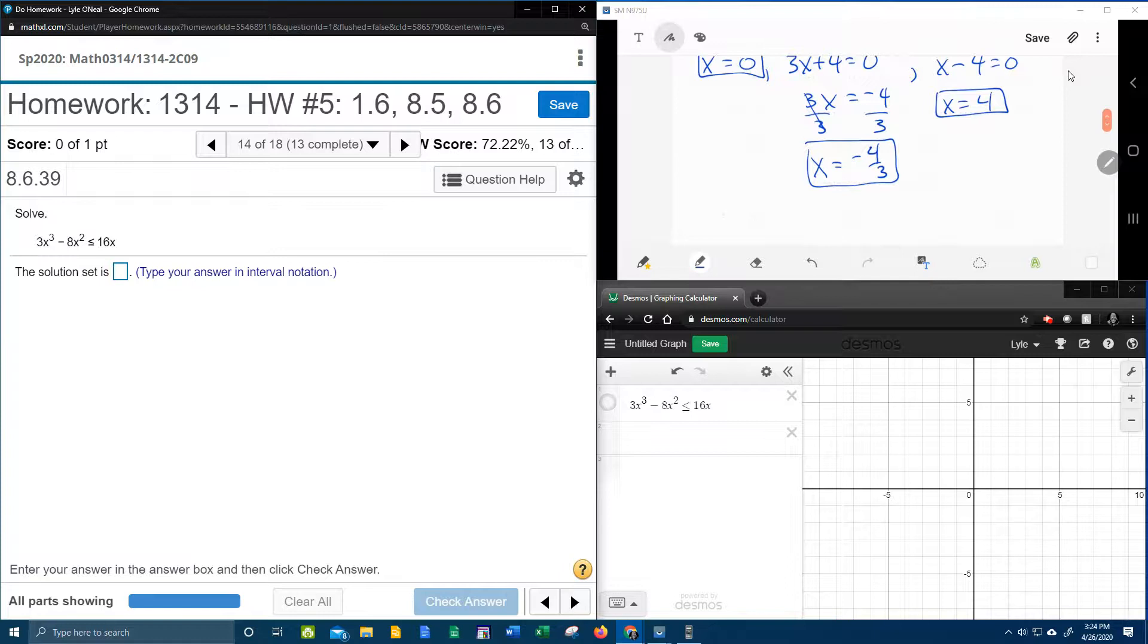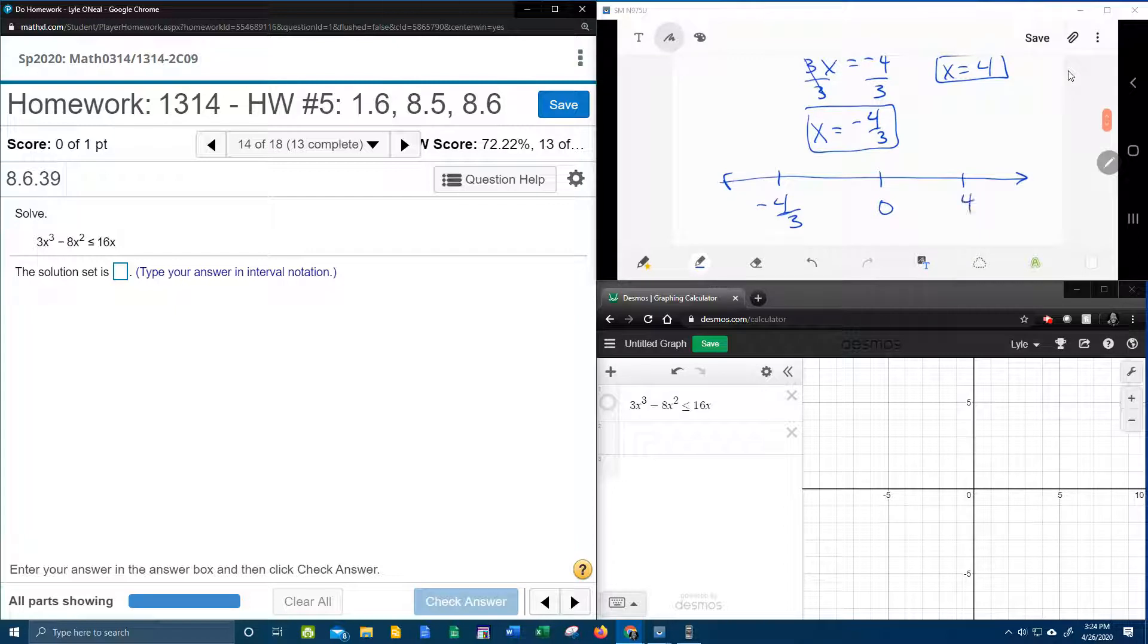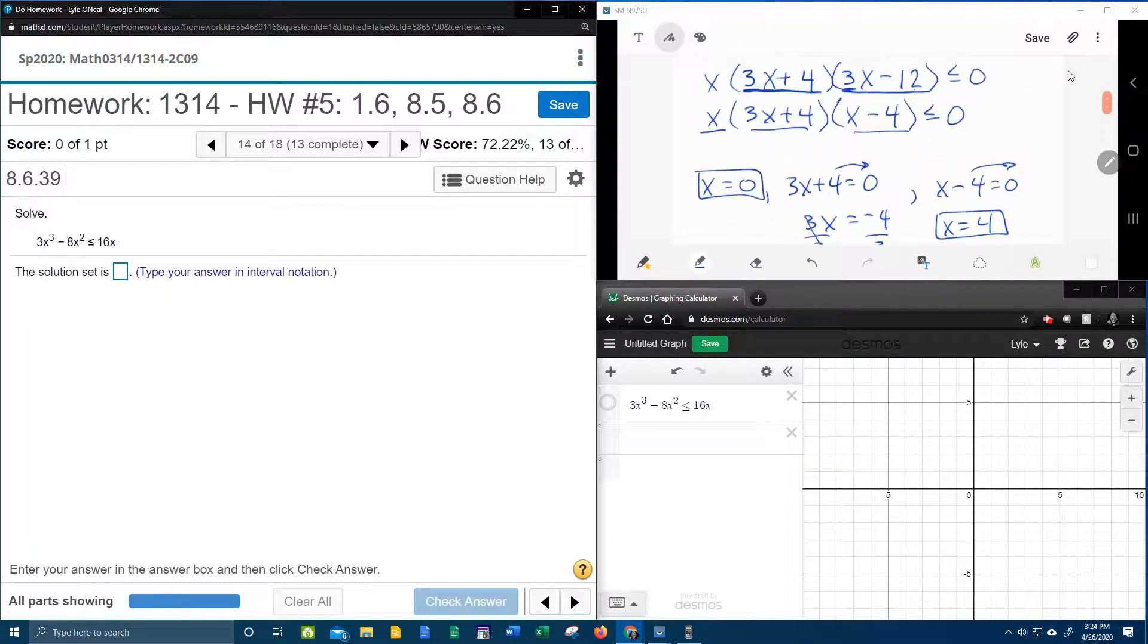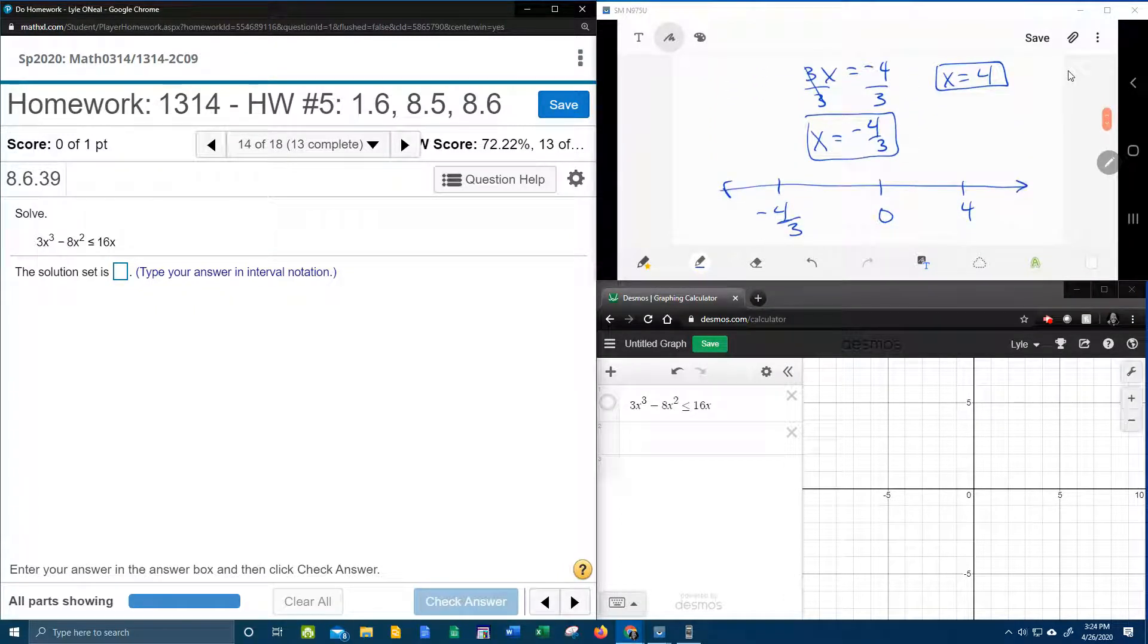And so now I need to go to the number line with my critical points. Make sure you put them in the right order. Negative 4 thirds first. It's the smallest. And then 0. And then 4. And let's remember this inequality. Remember originally it was less than or equal to. So that means that these critical points are going to have solid dots. Because it had the equal to.